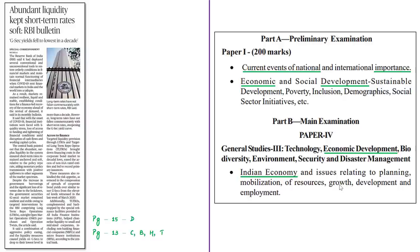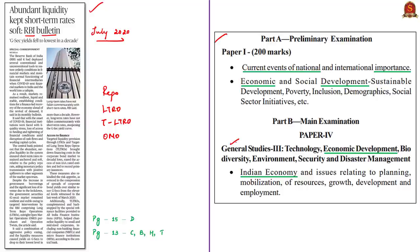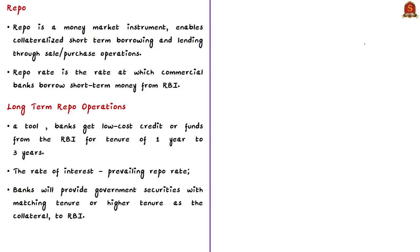This news article is with reference to the RBI Bulletin for the month of July 2020. In this context, we are going to discuss key important terms such as repo rate, long-term repo operations, targeted long-term repo operations, and open market operations. The syllabus relevant for the analysis of this news article is highlighted here for your reference. Now, what do you mean by repo rate?